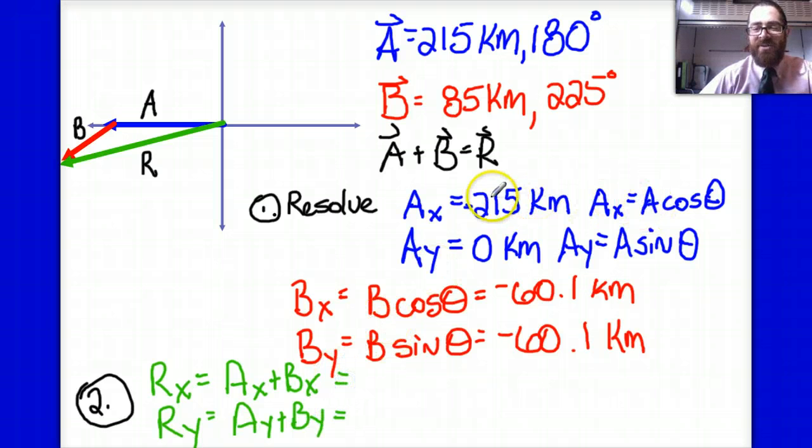Recognizing that AX is 215, but it's negative 215 and BX is negative 60, I get something on the order of negative 275.1 kilometers being the x component of my resultant.